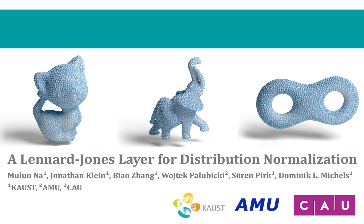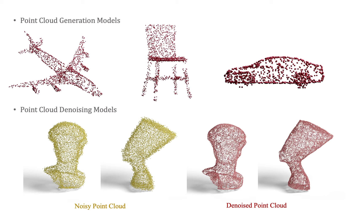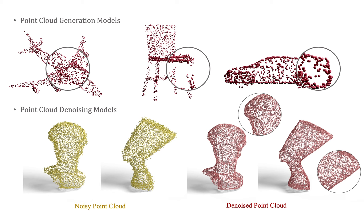In this work, we present the Lennard-Jones Layer for point cloud distribution normalization. Point clouds are an important representation of complex 3D shapes. Learning-based point cloud generation and denoising models often lead to point clouds with poor distributions. They contain holes and clusters, leading to an inefficient use of the limited number of points without contributing additional information to the result. Our work focuses on distribution normalization of point clouds in these tasks.